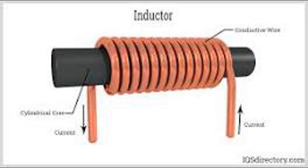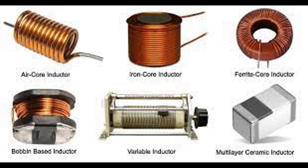Number 3 is transformers. Transformers are devices that play a crucial role in electrical power distribution and transmission. They are based on the principles of electromagnetic induction and consist of two coils of wire, known as the primary and secondary windings, which are typically wound around a common magnetic core. Transformers operate on the principle of mutual induction. When an alternating current flows through the primary winding, it generates a magnetic field around it, and this changing magnetic field induces a voltage in the secondary winding through electromagnetic induction.